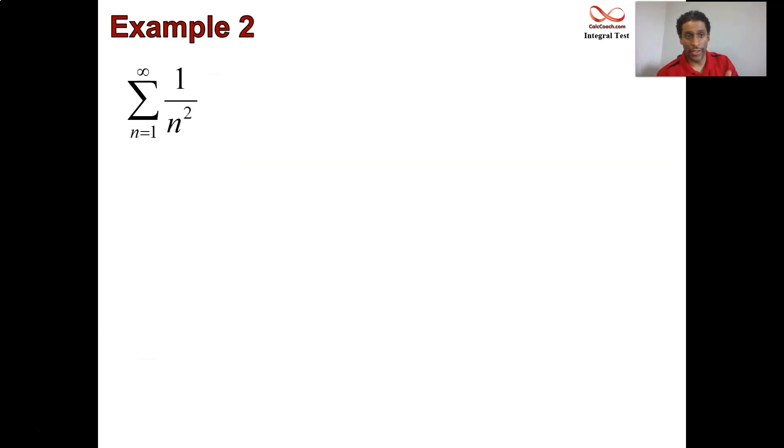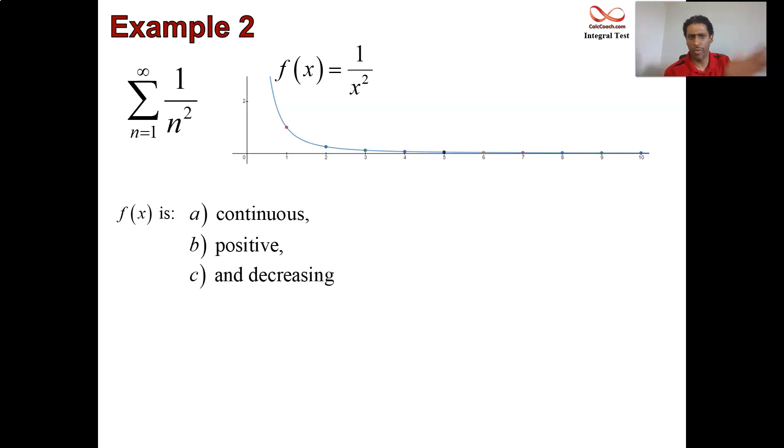And so, when n is 1, you're at 1. But when n is 2, now you're at a 4th. When n is 3, you're at a 9th. And so, it approaches 0 much quicker. The function is going to be 1 over x squared, which is a function that is continuous, and it's positive, and it's decreasing, so long as you're from 1 to infinity.